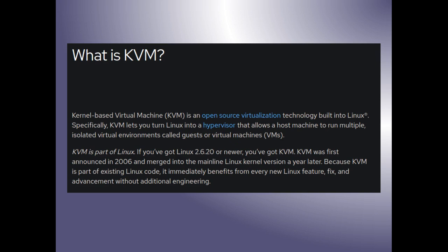KVM lets you turn Linux into a hypervisor. Your GNU Linux OS becomes the hypervisor that allows the host machine to run multiple isolated virtual environments — called guests, or VMs. KVM is part of Linux, built in for a long time, first announced in 2006. If you've got Linux version 2.6.20 or newer, then you have KVM. It was merged into the mainline Linux kernel a year later in 2007. Because KVM is part of the existing Linux code, it immediately benefits from new Linux features without additional engineering.